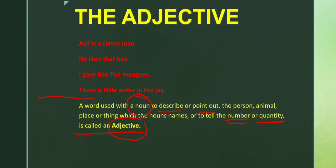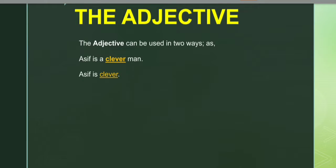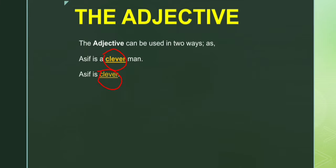The next thing is that the adjective can be used in two ways. Look at the example: 'Asif is a clever man.' The second example is: 'Asif is clever.' You may see there is a difference, but both sentences convey the same meaning. There is something new to be learnt here.